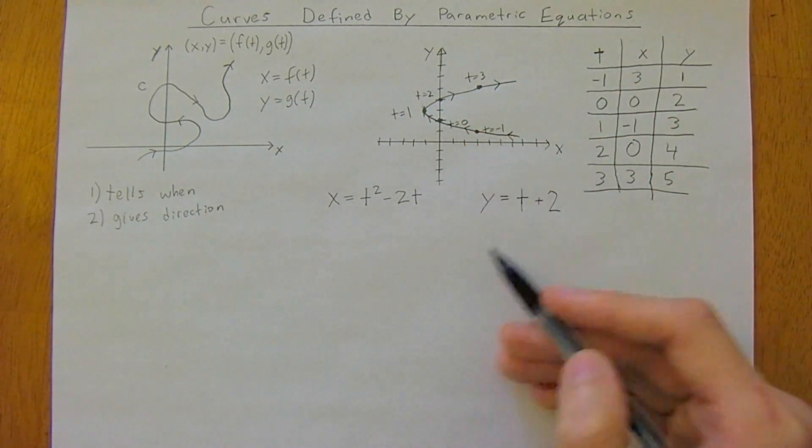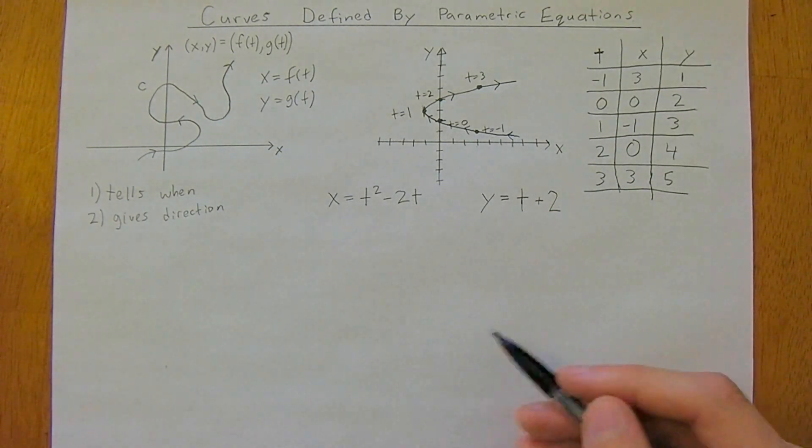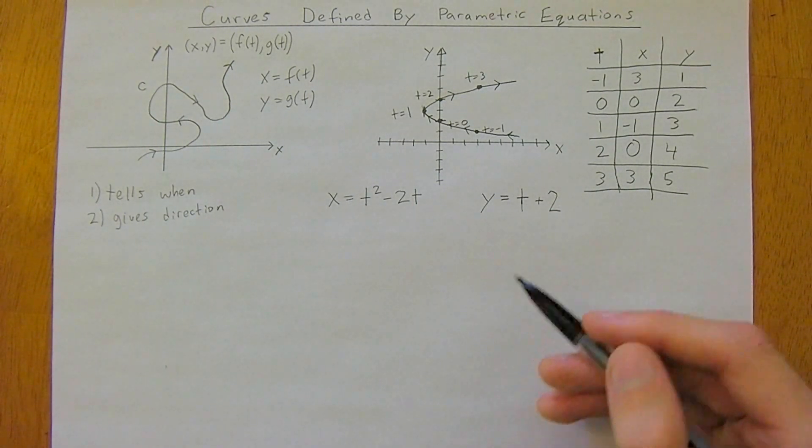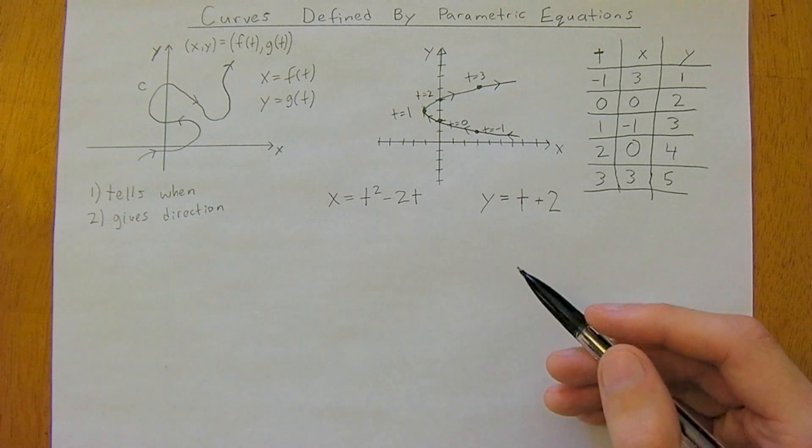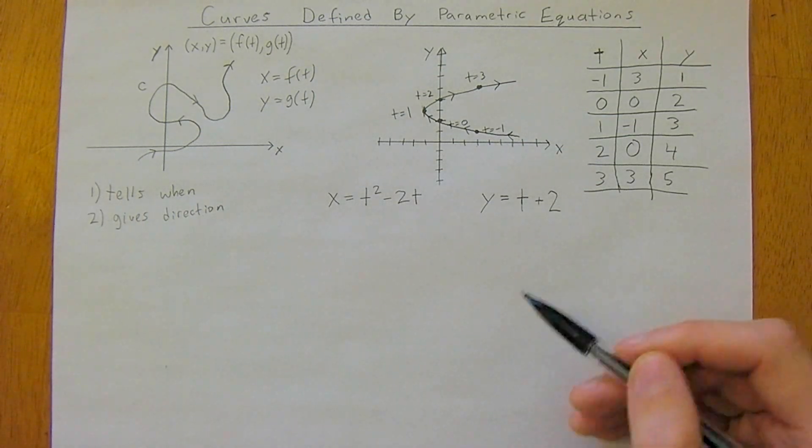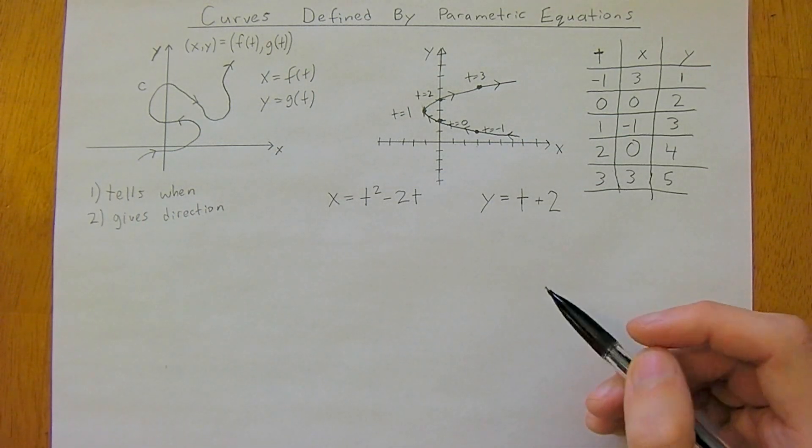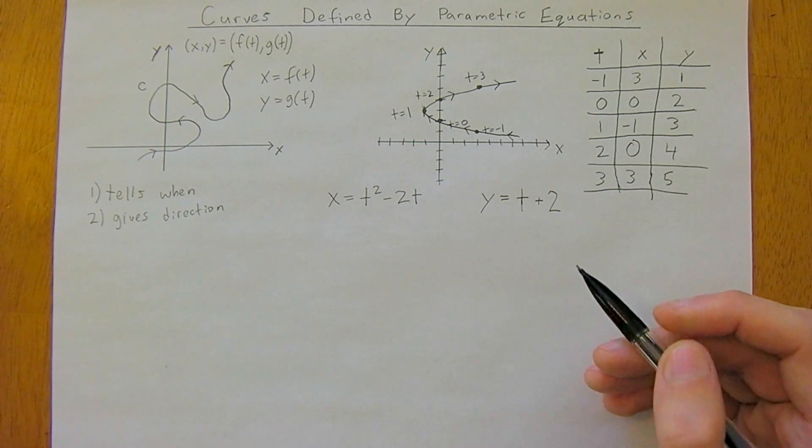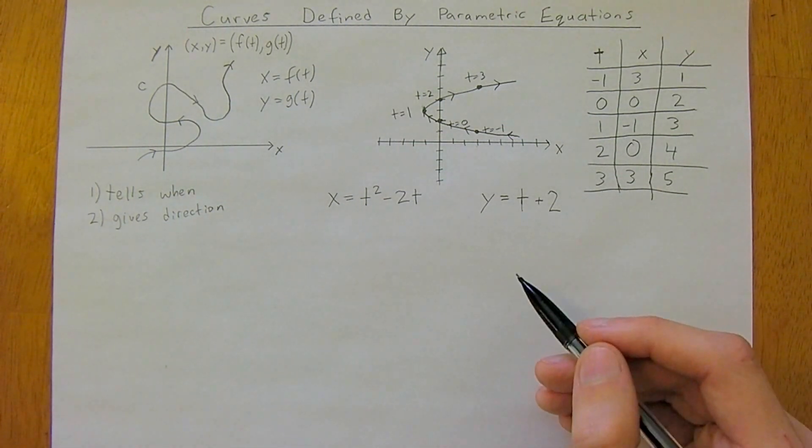This is our curve. This is the environment we're going to start working in. You can notice from this that the particle in this case traces out a parabola. This can actually be confirmed if we eliminate the parameter t.